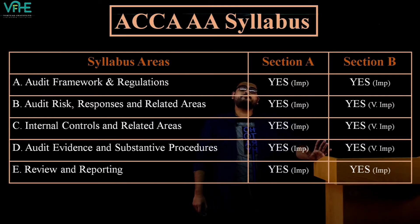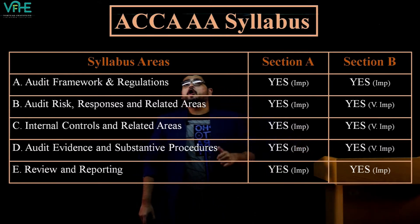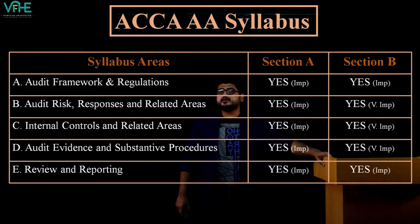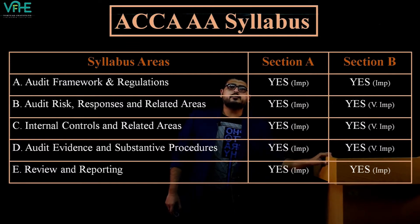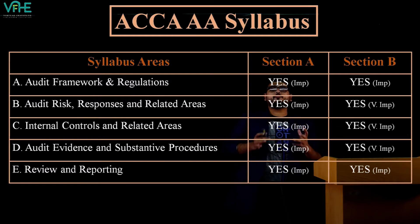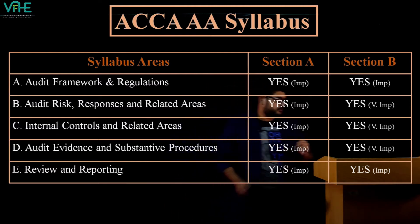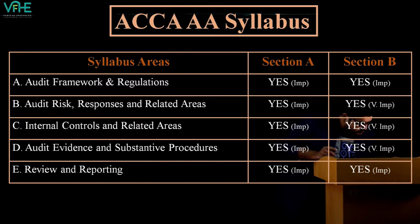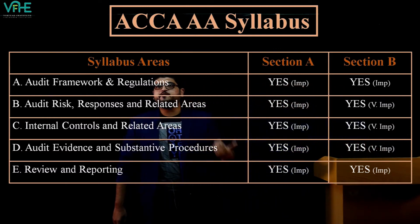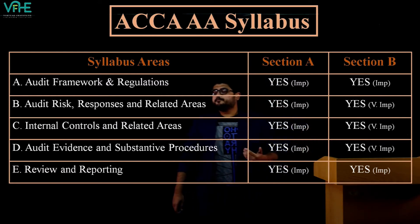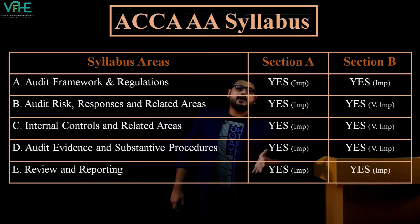Another key reason the examiner focuses on this paper is that Triple A — Advanced Audit and Assurance — is an optional subject. So for some students, this is the last time they'll study Audit and Assurance. The examiner wants students to have solid knowledge of the subject even if they don't go for Triple A. Also, marks from F5 to F9 contribute to your OBU grade.